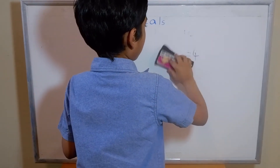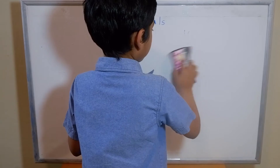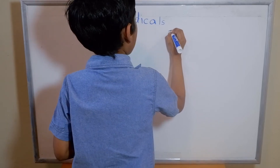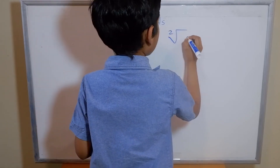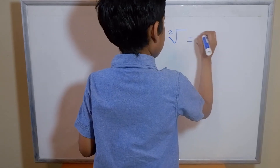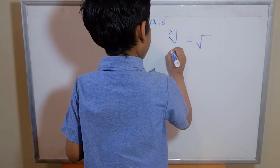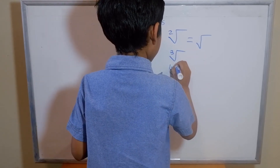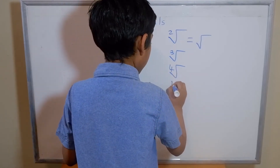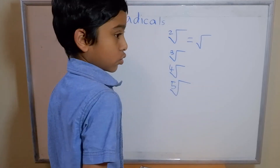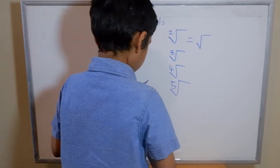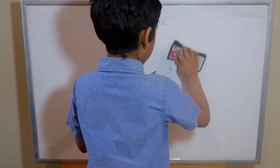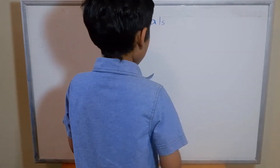Let's look at common radicals. As we previously saw, a square root or second root is written with just the radical symbol. A cube root, a fourth root, and a fifth root are written with the index number tucked inside the radical symbol, and so on.